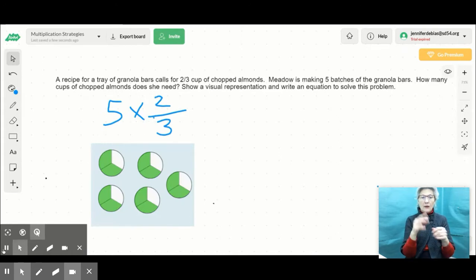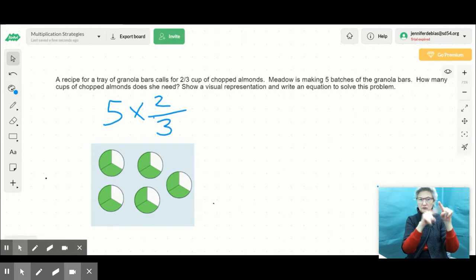So here we have our model. And what I did was I drew 5 circles to represent the 5 batches and I broke those into thirds to show 2/3 for each batch. So we have 2/3 five times to show 5 times 2/3.